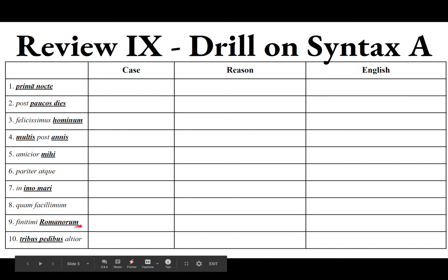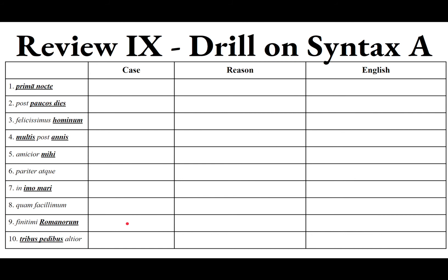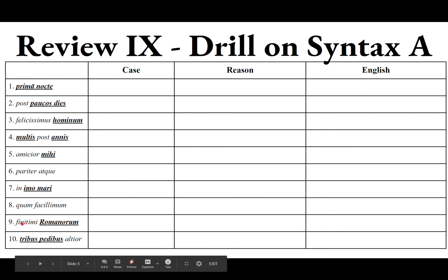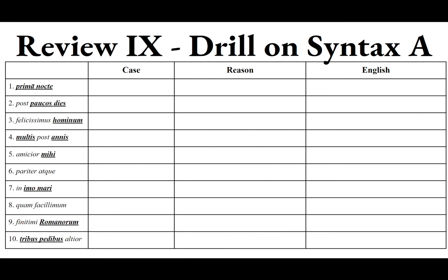Number nine: finitimi Romanorum. Romanorum is genitive plural. The reason is genitive of possession. Finitimus a um as an adjective means 'neighboring' and takes a dative with adjective, but here finitimi is acting as a substantive — not 'neighboring' but 'neighbors.' Finitimus i masculine is a neighbor. So finitimi Romanorum means the Romans' neighbors, where Romanorum is genitive plural of possession.